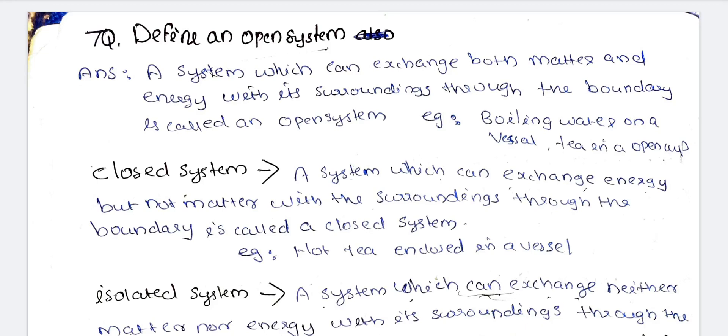An open system is one which can exchange both matter and energy with the surroundings through the boundary. For example, boiling water in an open vessel — steam (matter) escapes to the surroundings and heat energy is also transferred to the surroundings. So in an open system, both matter and energy are transferred to the surroundings.